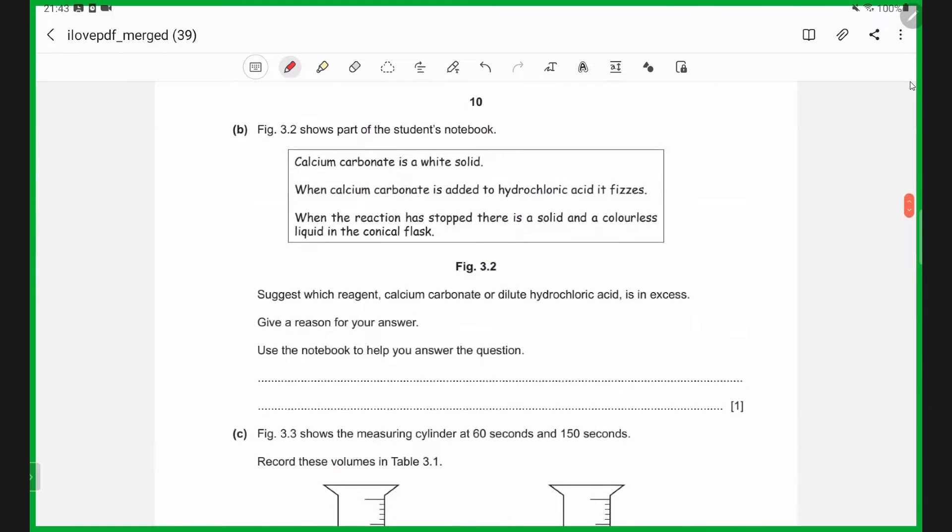Next, we have a student's notebook that tells us calcium carbonate is a white solid, and it's added to hydrochloric acid. It fizzes. When the reaction stops, there is a solid and some liquid in the flask. Remember that the reaction between calcium carbonate and hydrochloric acid will produce calcium chloride and carbon dioxide and water. The liquid is basically a calcium chloride solution, and the gas is carbon dioxide gas.